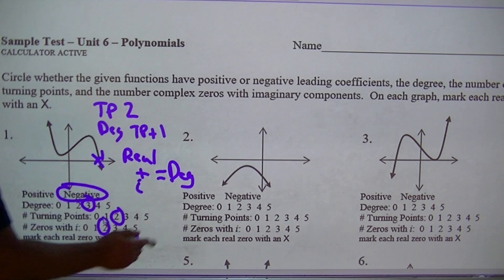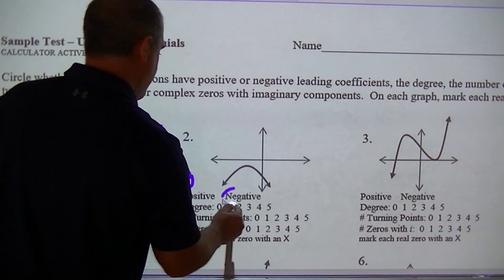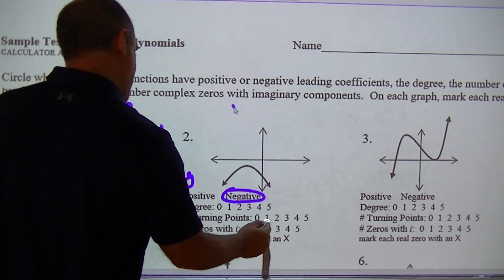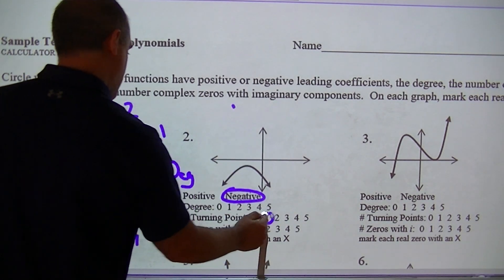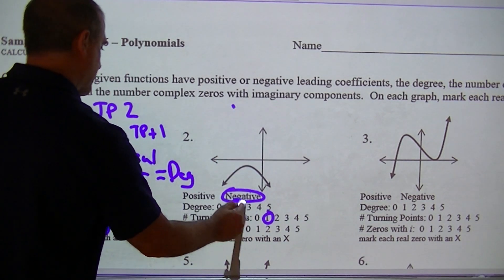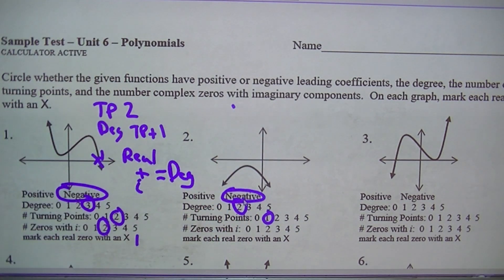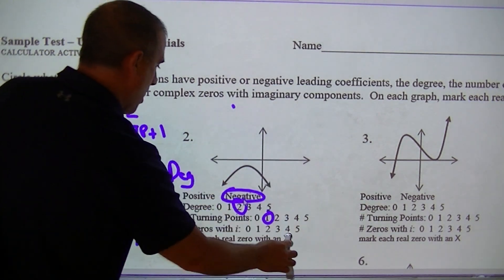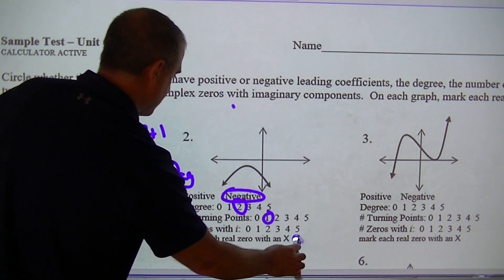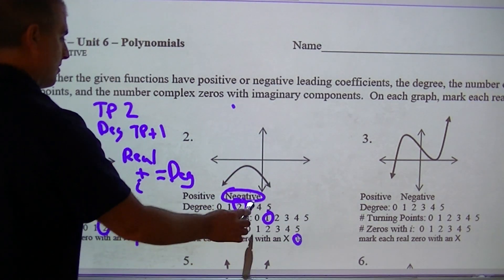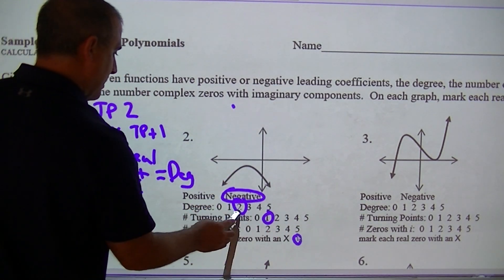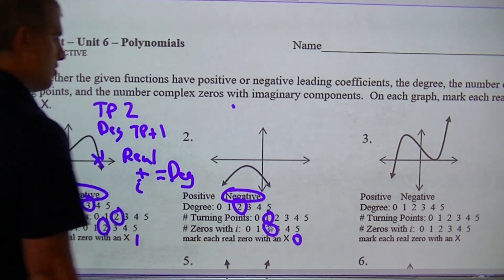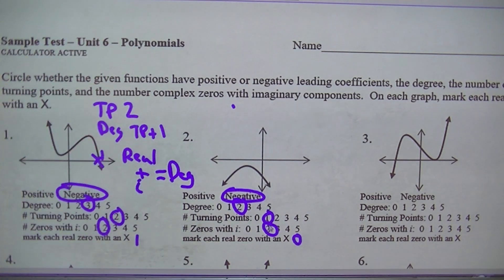This is also a negative. There is one turn point there, which means that would have degree two. It does not cross, so that would be zero real zeros. The only way I can get two is to also have two imaginary zeros for that.